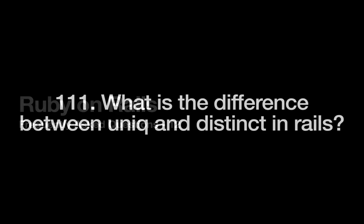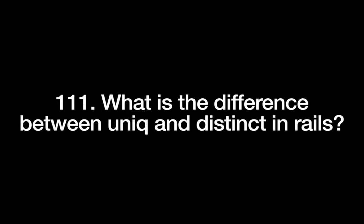What is the difference between unique and distinct in Rails? Unique is an array method and distinct is an SQL method, and both find records with unique values. You should know when to use unique and when to use distinct — practicing this will make the difference clear.